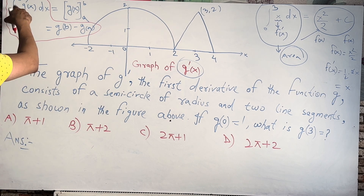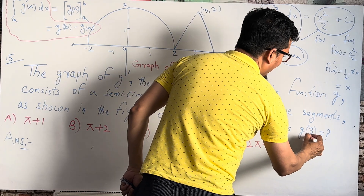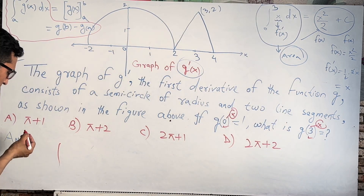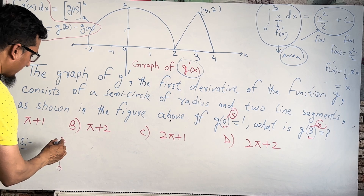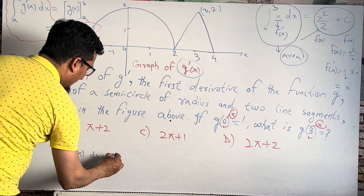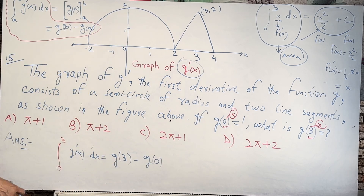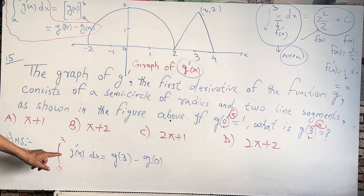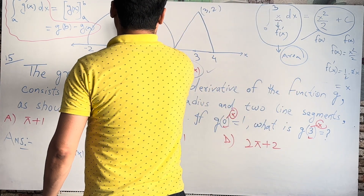Using this theorem, we solve our question. We have G(0) = 1 and we need G(3). So we can write the integral from 0 to 3 of G prime(X) dx, which equals G(3) minus G(0). This gives us a specific result — our area. G prime of X is already given in the graph, so from 0 to 3 we need to find the area under the curve.